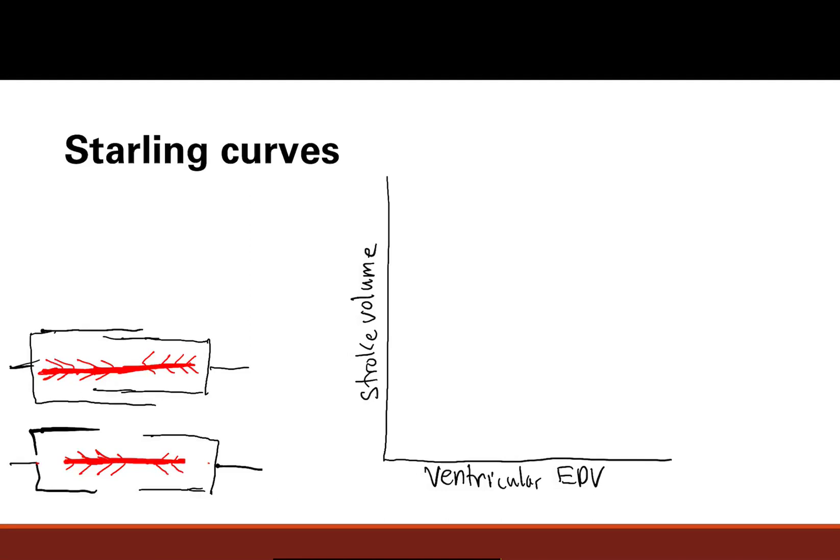Starling curves illustrate one simple thing: the relationship between cardiac contractility, which is reflected by stroke volume, with ventricular end-diastolic volume. It says that your contractility will increase with increased end-diastolic volume.